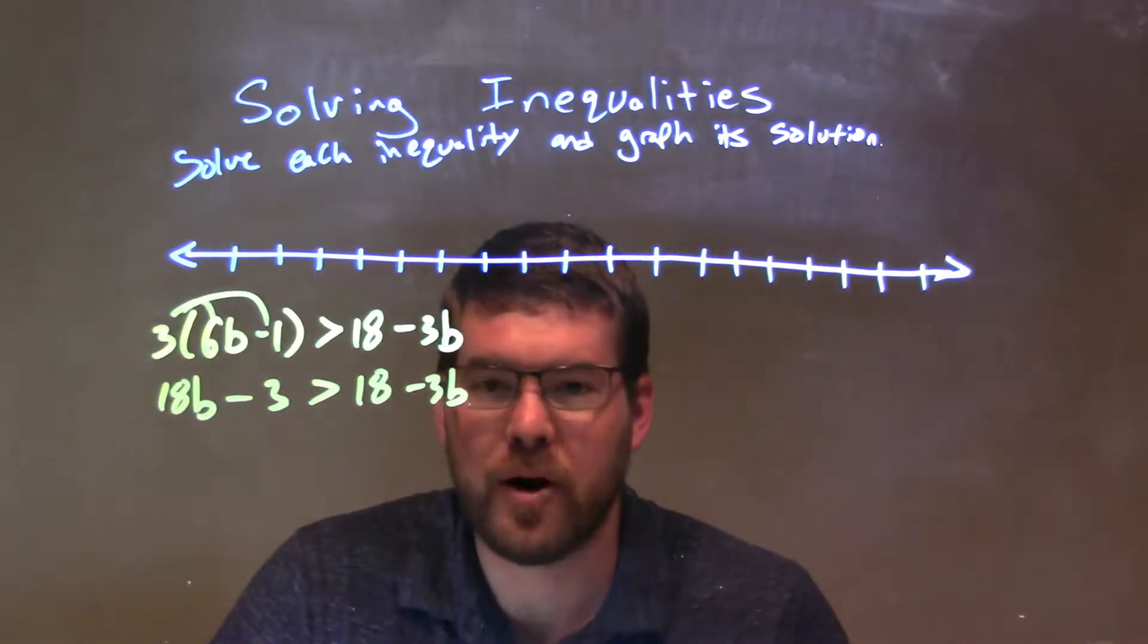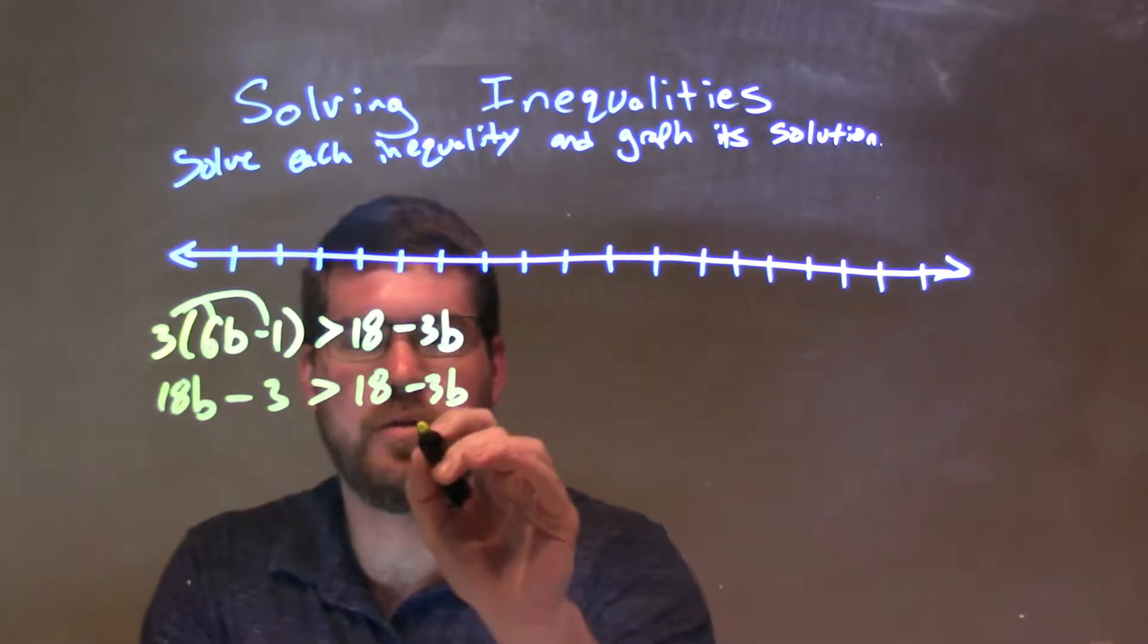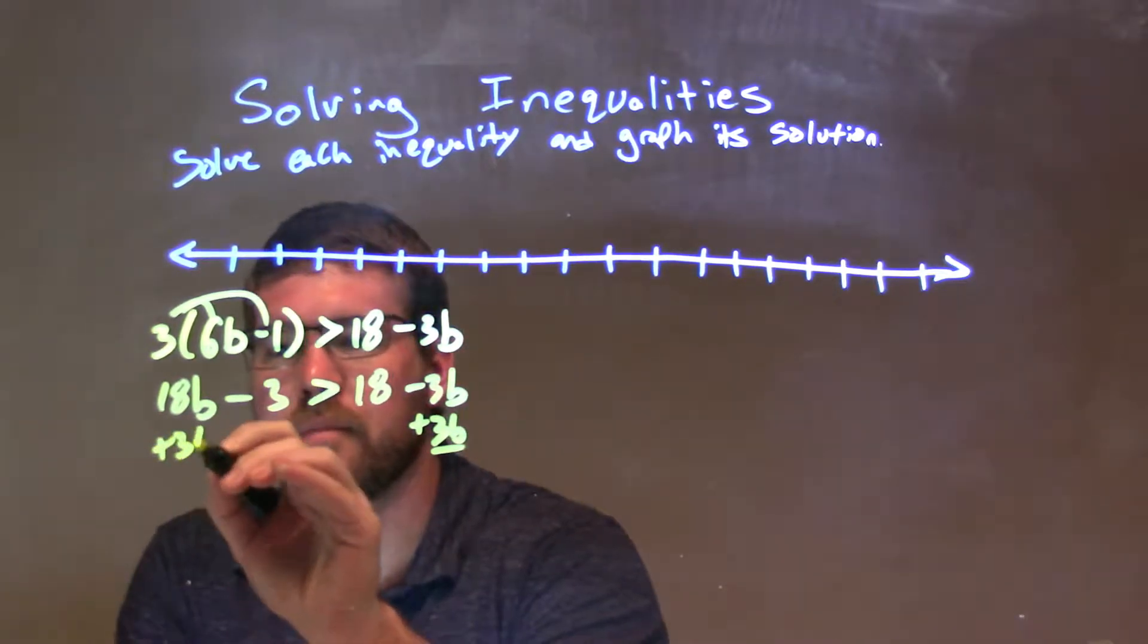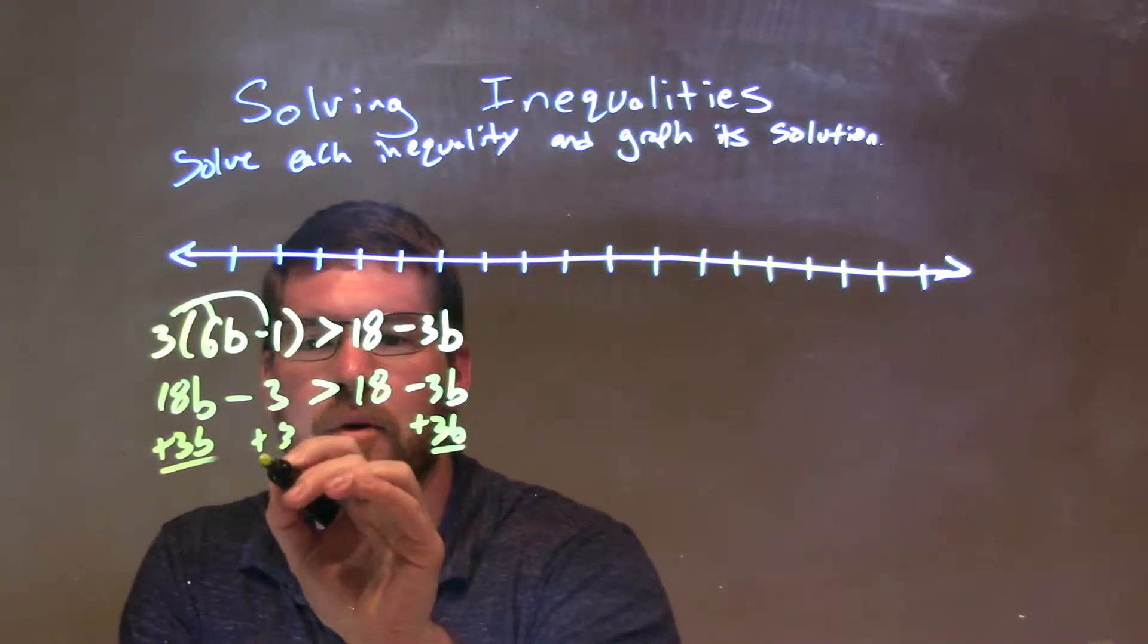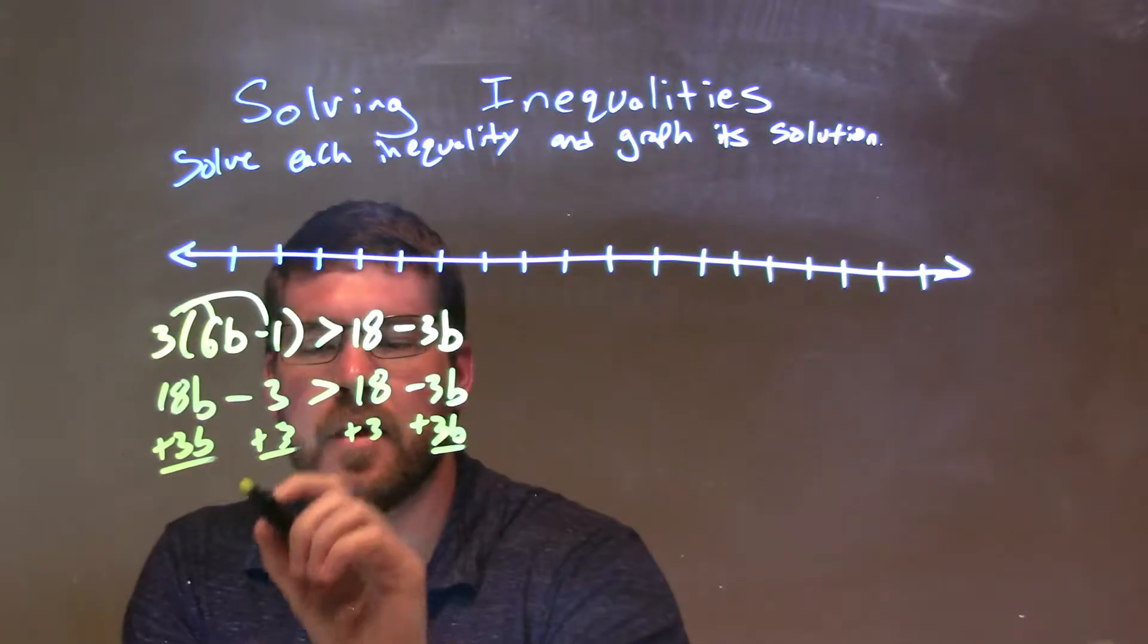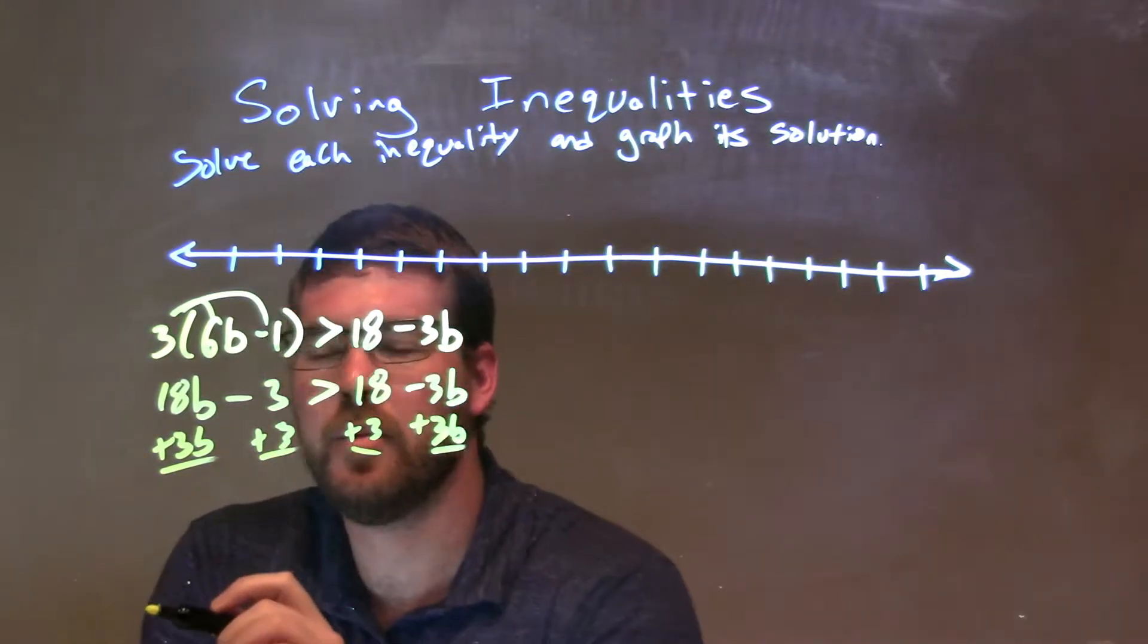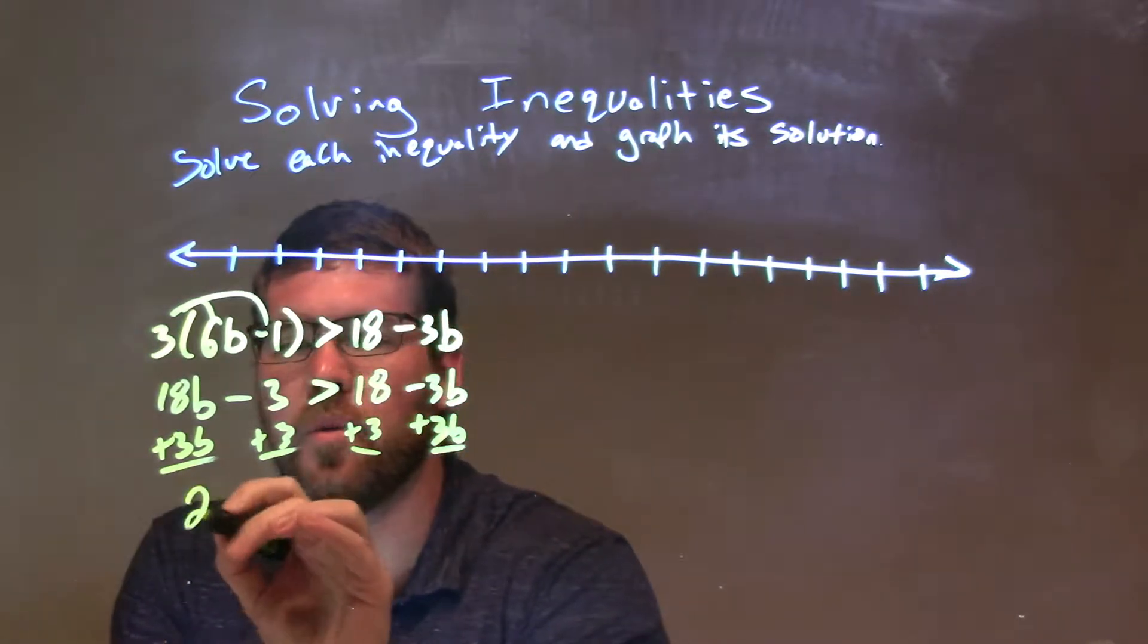So now we're going to bring our b's together and our numbers together. Let's just go add a 3b to both sides here, plus 3b. And I'm going to add a 3 to both sides. This will eliminate the 3's here, and these 3b's right there.